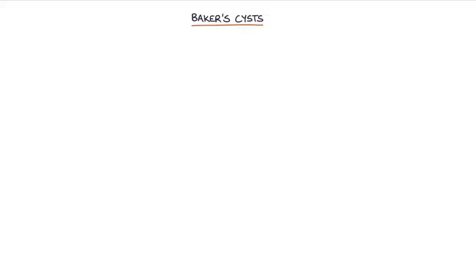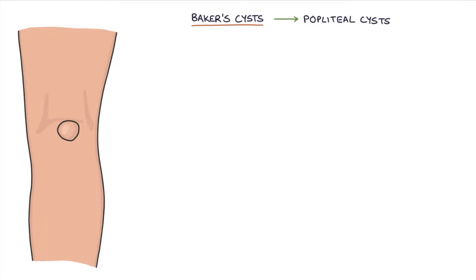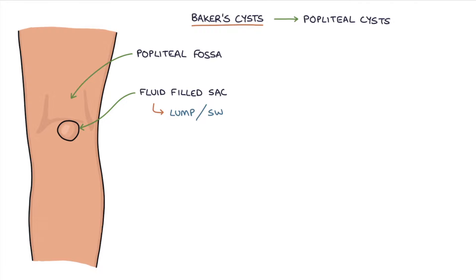Baker's cysts are also called popliteal cysts. A Baker's cyst is a fluid-filled sac in the popliteal fossa, causing a lump or swelling at the back of the knee.